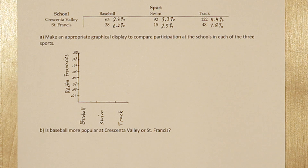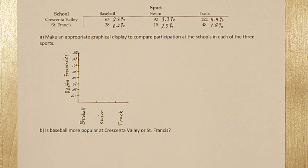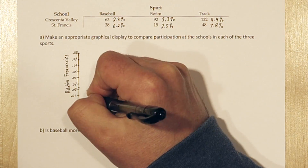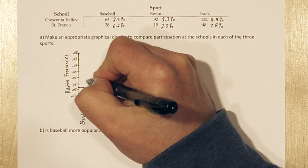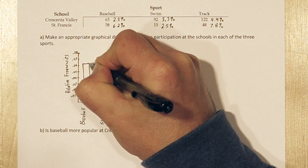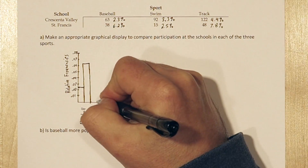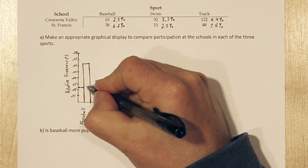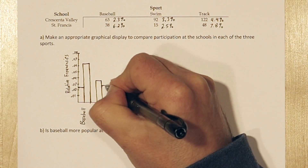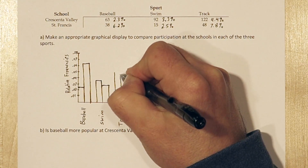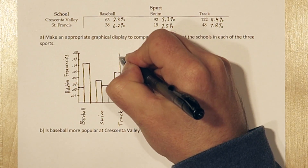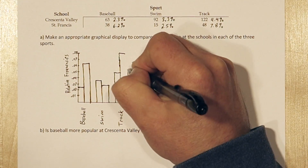Since our maximum sport participation is 7.8%, we need to make sure our vertical axis goes at least that high. For baseball, we see about 2.3% of the students play at Kersenna Valley vs. 6.2% at St. Francis. For swim and track, we also have different participation rates, and this can all be shown in our side-by-side bar graph.